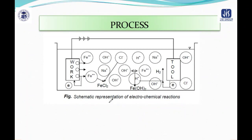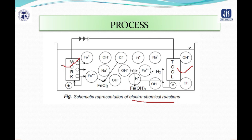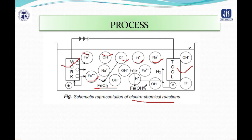This is the representation of the electrochemical reaction occurring during the machining process. You can see the iron workpiece and the tool with the gap filled with electrolyte. In the electrolyte, Fe²⁺, OH⁻, H⁺, Na⁺ ions are present, and the final product obtained is Fe(OH)₂.